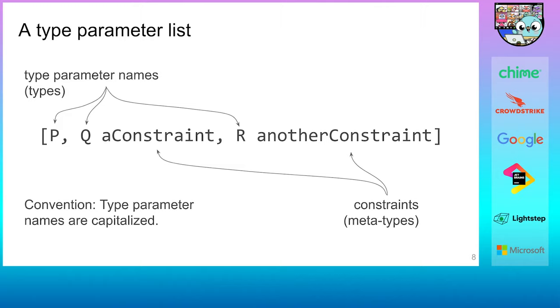But now, the parameter names stand for types rather than variables. And in the position of types, we have meta types. And we call those constraints. Like the types in ordinary parameter lists specify what ordinary non-type arguments are permitted, the constraints specify what type arguments are permitted. And as a convention, and to visually highlight that we're dealing with types, we capitalize type parameter names.